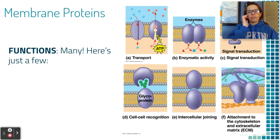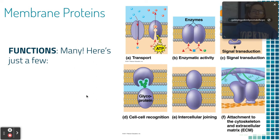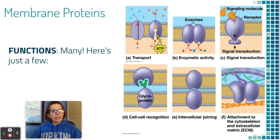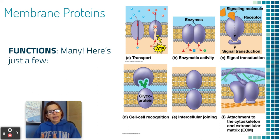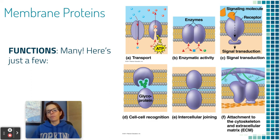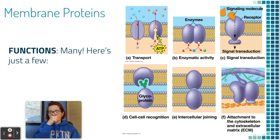These are some examples of what membrane-embedded proteins do. Transport proteins have tunnels that allow molecules to move either direction — sometimes without energy, sometimes requiring ATP. Some proteins are enzymes that speed up reactions embedded in the cell membrane. Some are receptors that receive hormones and trigger responses inside the cell. Some are glycoproteins that allow cells to recognize each other. Some allow cells to join each other. Others are attached either to the extracellular matrix outside or to microfilaments inside the cell.